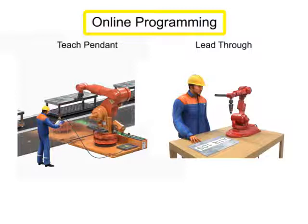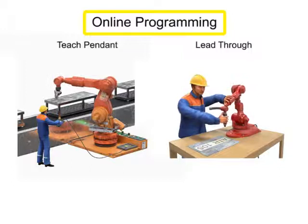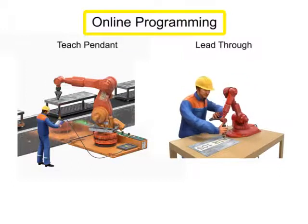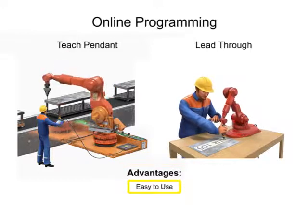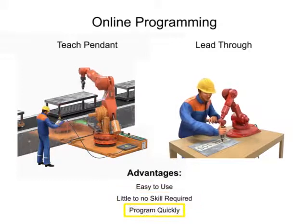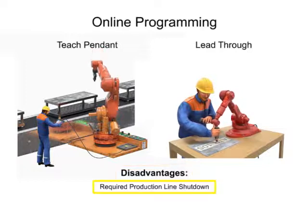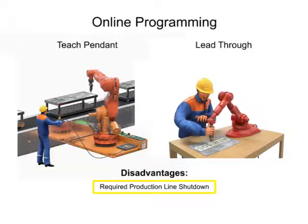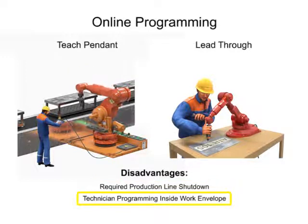Online programs can typically be edited for speed, point error correction, and small modifications once the initial programming is complete. Advantages of online programming include ease of use, little or no programming skills required, and the speed at which a program can be created. The disadvantages of online programming are the requirement to shut down the production line while programming is occurring, and that the technician typically has to be in the work envelope while the robot is operating, which exposes him to greater risk of damage.